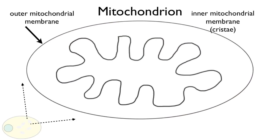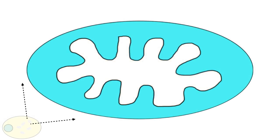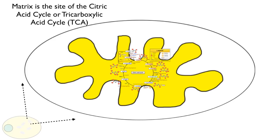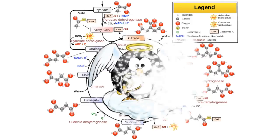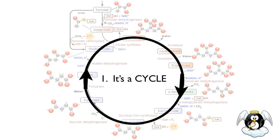The mitochondrion has two membranes — an outer membrane and an inner membrane which is thrown into folds to increase surface area. The space inside the inner membrane is called the mitochondrial matrix, and that's where the citric acid cycle takes place. There is also the intermembrane space between the inner and outer membranes. The citric acid cycle, also called the tricarboxylic acid cycle or TCA, takes place in the matrix. Don't worry — I'm just going to show you the highlights of this cycle, not any of the details.